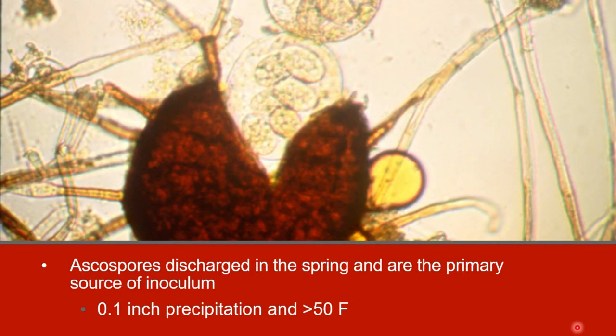Even though ascospores can be discharged from fall to late spring, the ascospores discharged in the spring are the primary source of inoculum and the spores that kickstart spring infections. Discharge is initiated if 0.1 inches of rain or a heavy fog occurs and when temperatures are above 50 degrees Fahrenheit. Under these conditions, most of the mature ascospores will be discharged within four to eight hours.